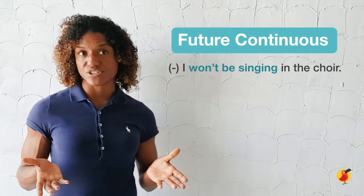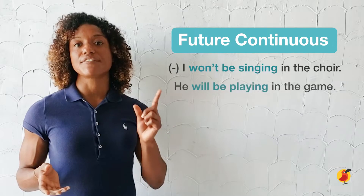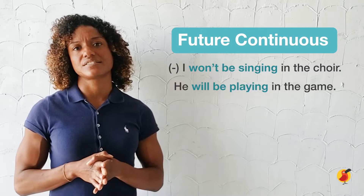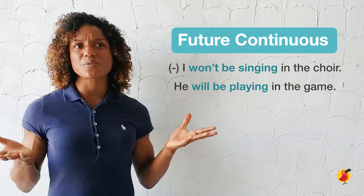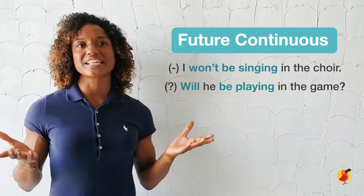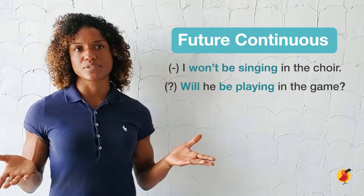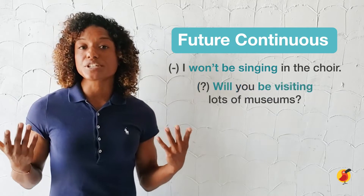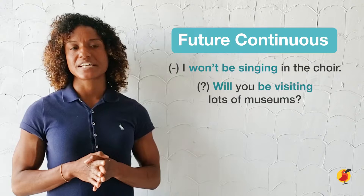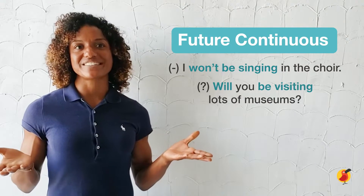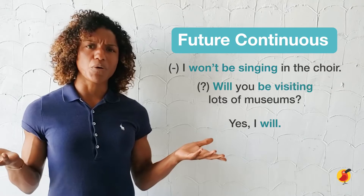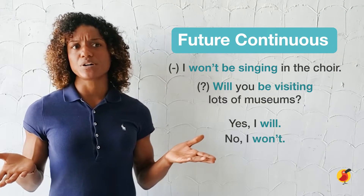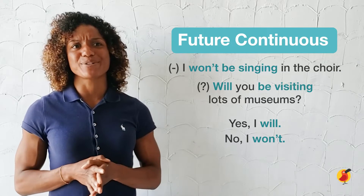To form a question, we only need to change the first and second words of a non-question sentence, so 'he will' becomes 'will he.' For example: Will he be playing in the game tonight? Will you be visiting lots of museums? And to answer, we say: yes, he will; or yes, I will; or no, he won't; or no, I won't.